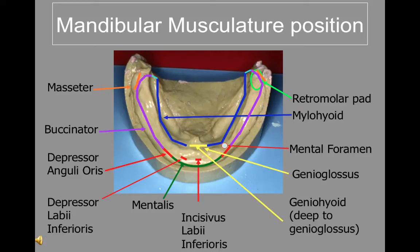The posterior extent of the mandibular denture is determined by the pharyngeal muscles. The action of the superior constrictor muscle determines the contour of the posterior lingual flange of the mandibular denture.